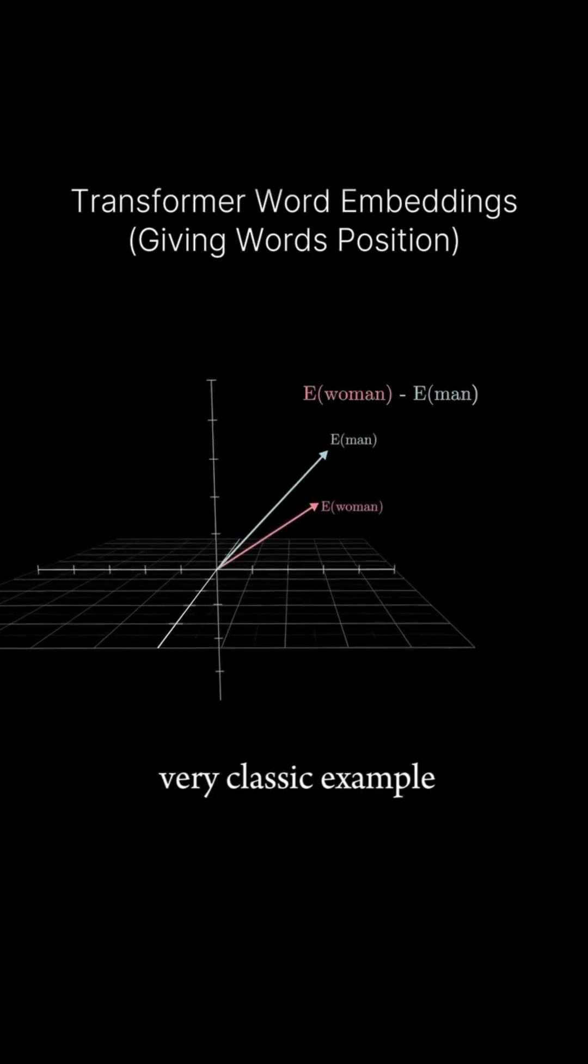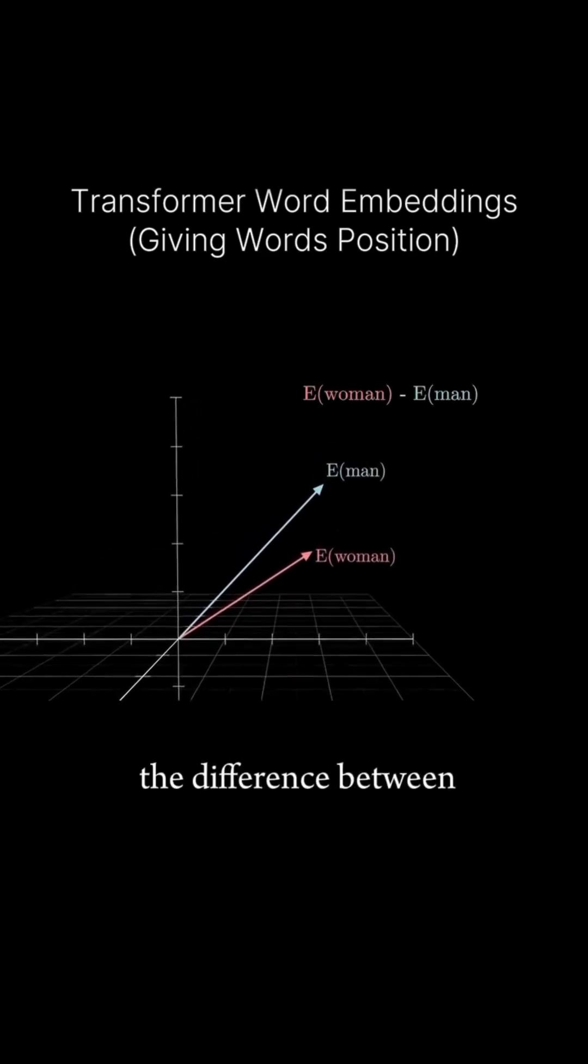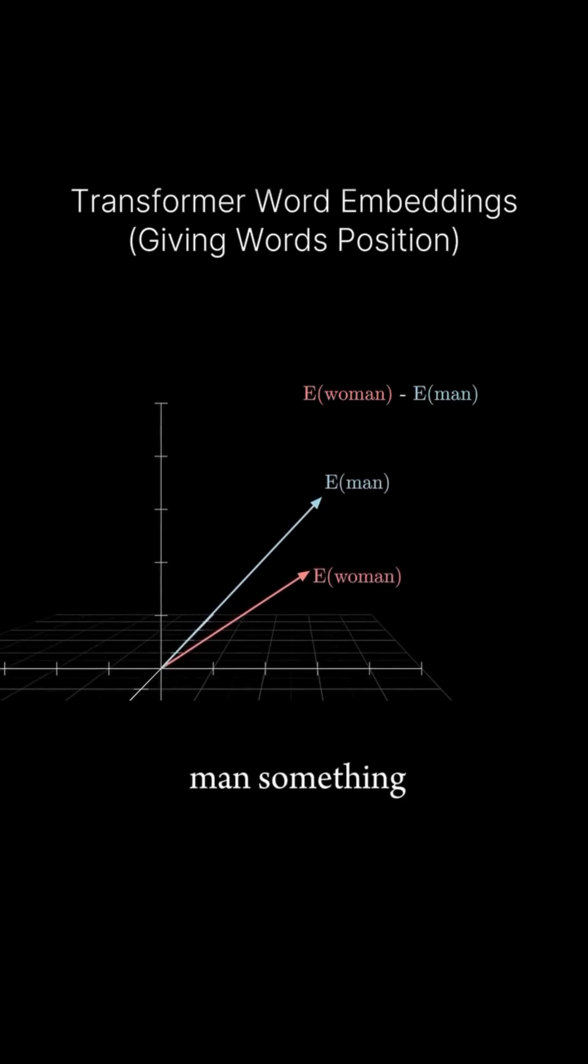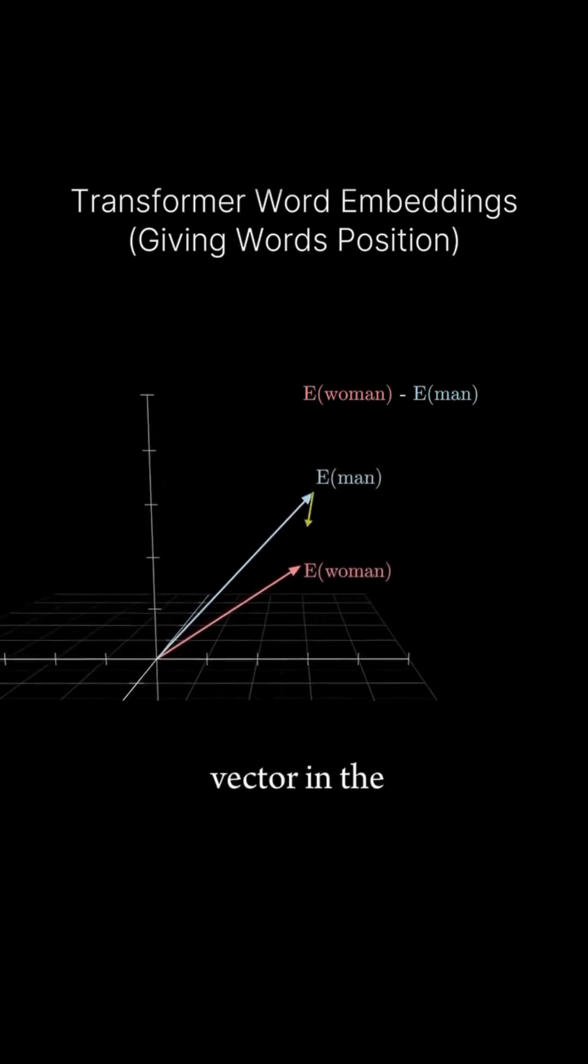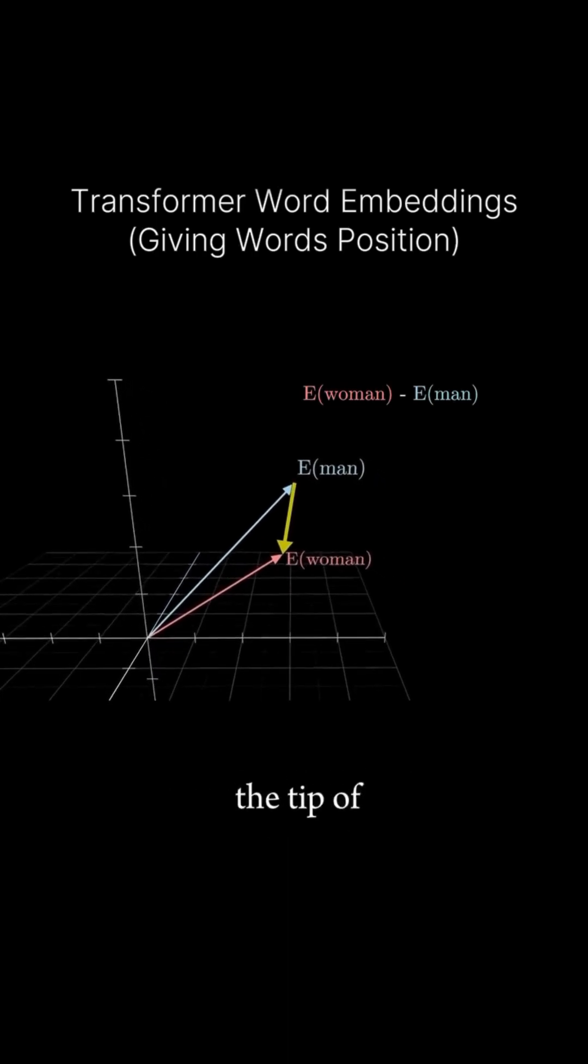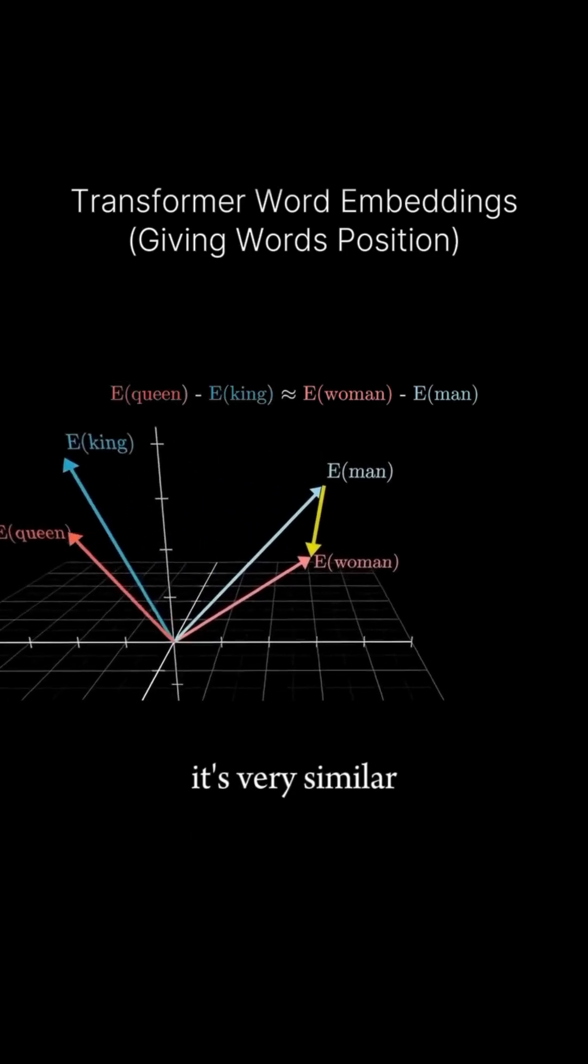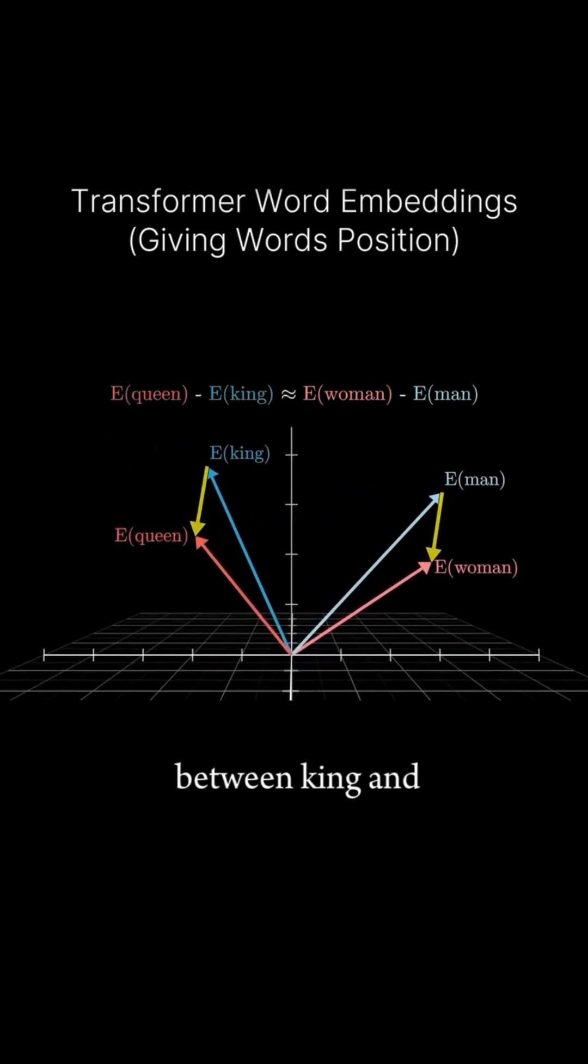A very classic example of this is how if you take the difference between the vectors for woman and man, something you would visualize as a little vector in the space connecting the tip of one to the tip of the other, it's very similar to the difference between king and queen.